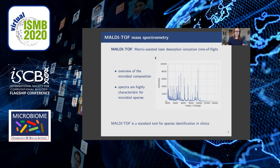MALDI-TOF mass spectrometry was designed for the analysis of large molecules such as proteins and peptides and is used to characterize bacterial samples. The whole bacterial cells are fragmented and the masses of these fragments are depicted in a spectrum where the x-axis shows the mass-to-charge ratio and the respective measured intensity is shown on the y-axis. The spectra are very characteristic for the microbial species, and in fact MALDI-TOF is a standard tool to identify the species of a microbe nowadays — for example, to identify which bacterium is responsible for a patient's infection in the clinic.